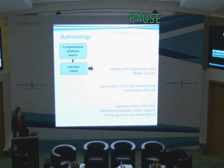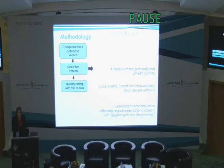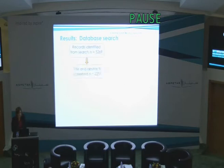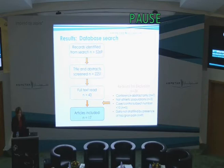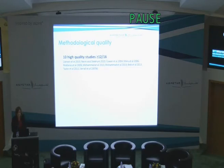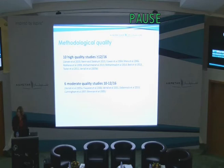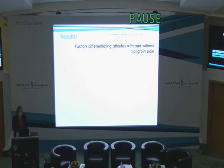These studies needed to examine at least one measurable factor that could be used to differentiate athletes with groin pain and those without. We used the modified Downs and Black Scale, and two of the reviewers rated the methodological quality — maximum score of 16. We conducted data extraction and data synthesis. We had a lot of hits, got rid of duplicates, and ended up with 43 full-text articles. After excluding, our final included articles was 17.